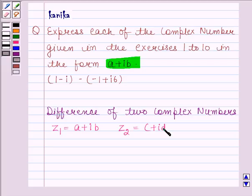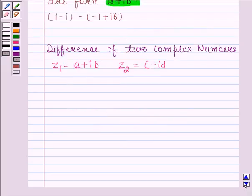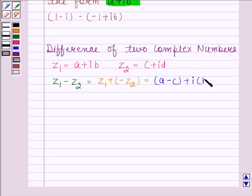then the difference, that is Z1 minus Z2, or we can say that addition of Z1 and minus Z2, is equal to (a-c) plus i(b-d).